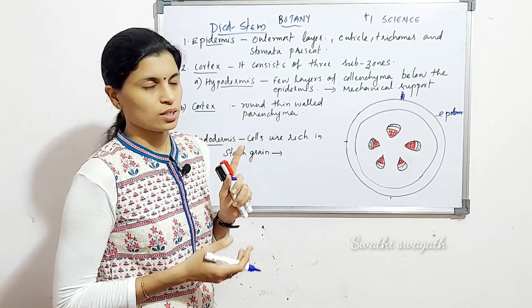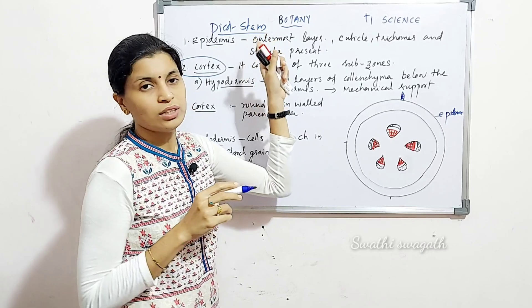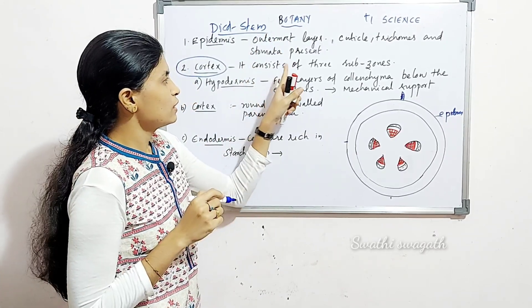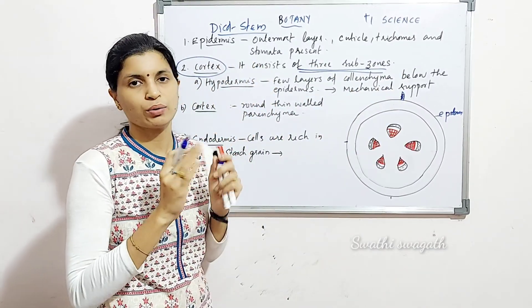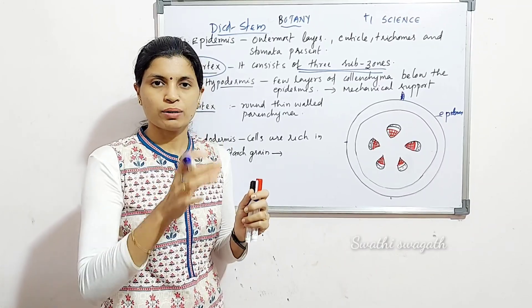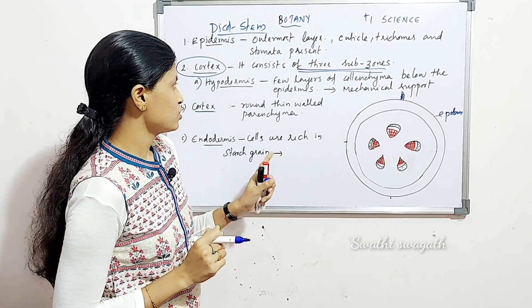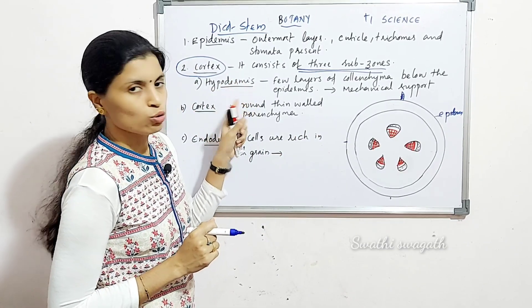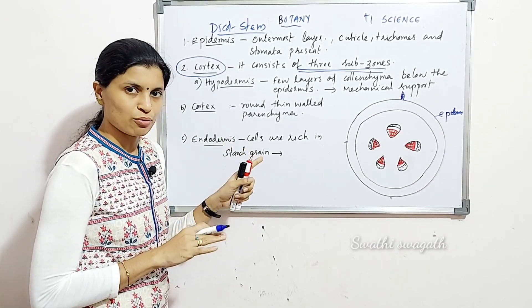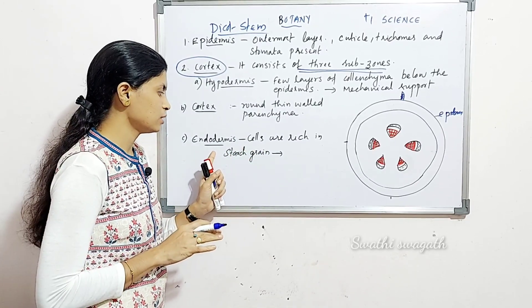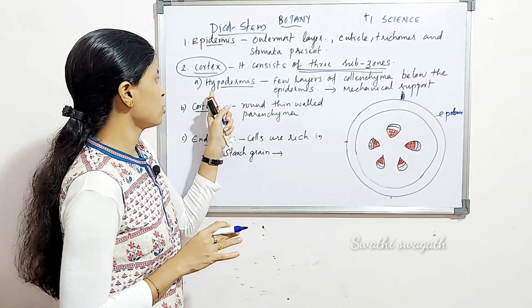The second part is the cortex region. This point is very important. Cortex in case of a dicot stem consists of three sub-zones. The first is hypodermis, second is cortex itself, which is the general cortex, and the third is the innermost layer of cortex called endodermis. Hypo means below, so hypodermis is the layer found below the epidermis.